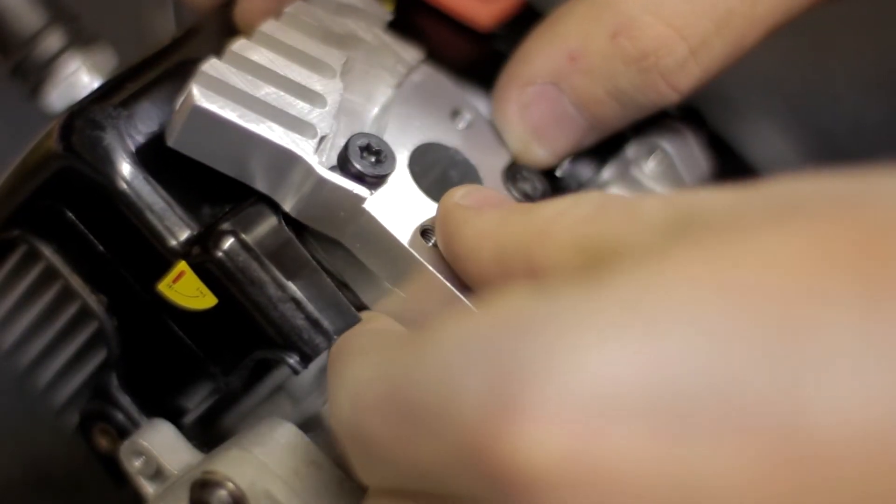And then we're going to drop the entire assembly right onto the engine. You want to tighten these down using Loctite.